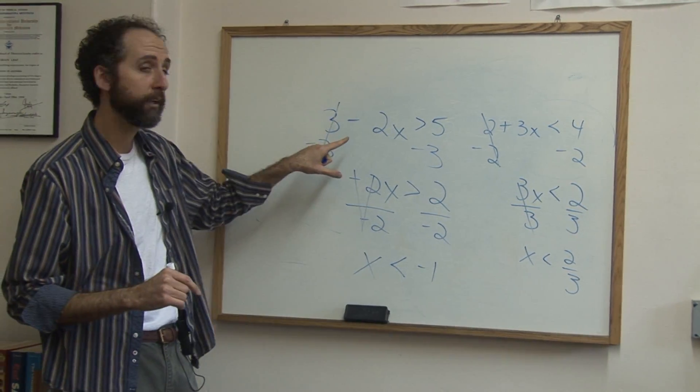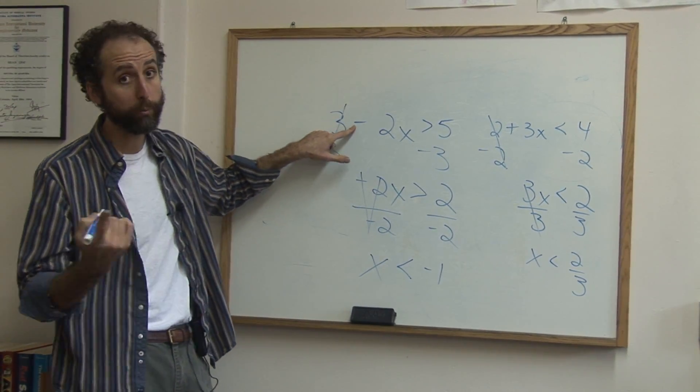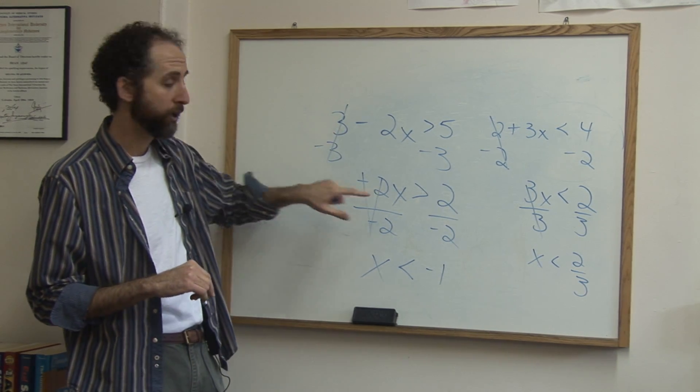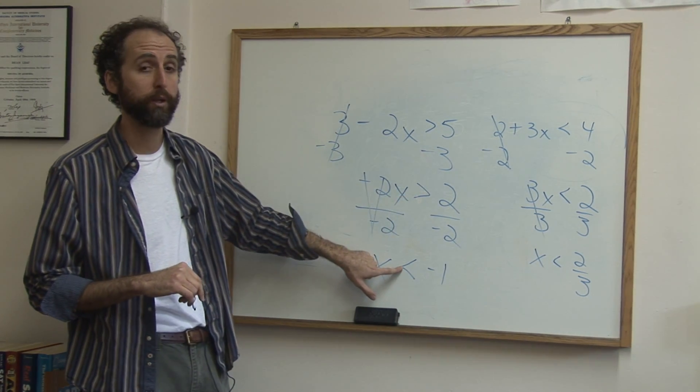So the one trick to dividing inequalities is when you divide or multiply by a negative number, you swap, you flip the inequality sign.